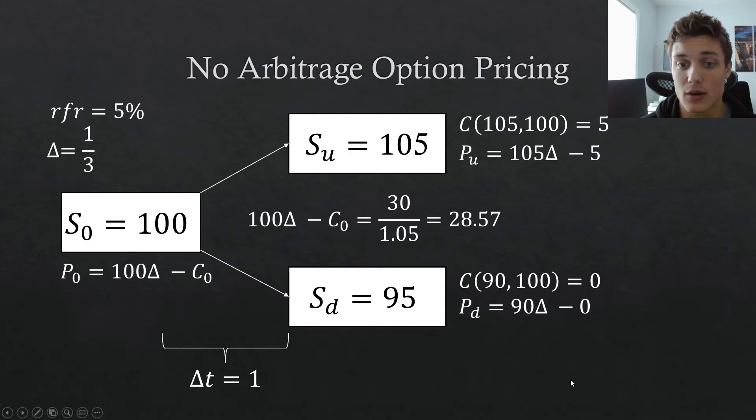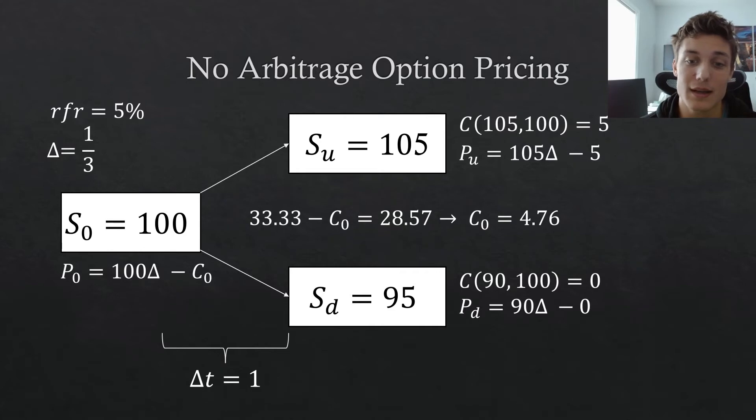So if you take a look here, 100 times delta, less the value of the call, is equivalent to 30 discounted at the risk free rate. So it's going to be equal to 28.57. Now, we know what delta is. So if we plug in delta, we get the equity portion of our portfolio is $33.33. That's going to be repeating, but bear with me for the rounding, less the value of the call option. So we can simply solve for that value by subtracting 28.57 and adding the call to the other side. And we see that the call is worth $4.76.